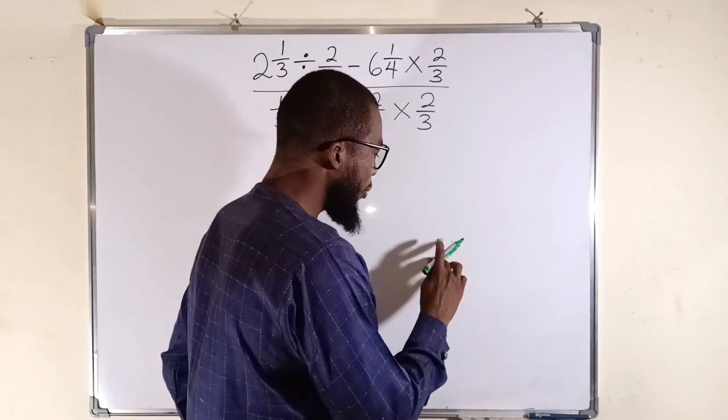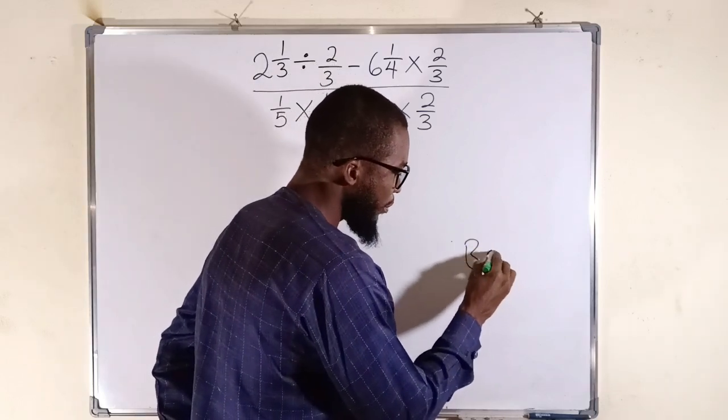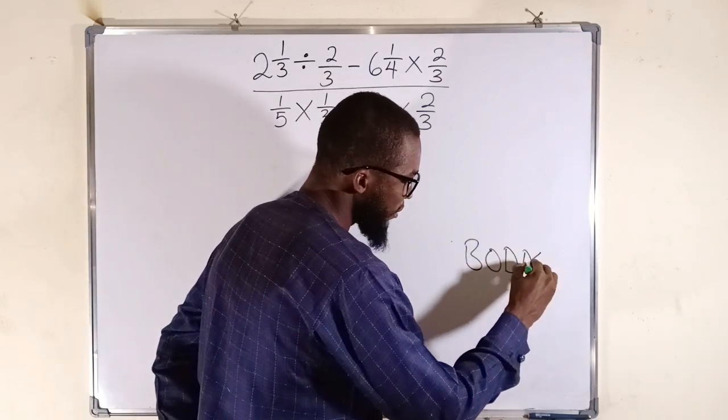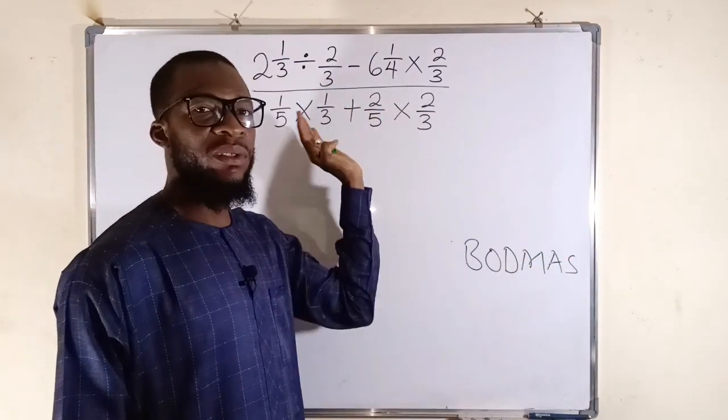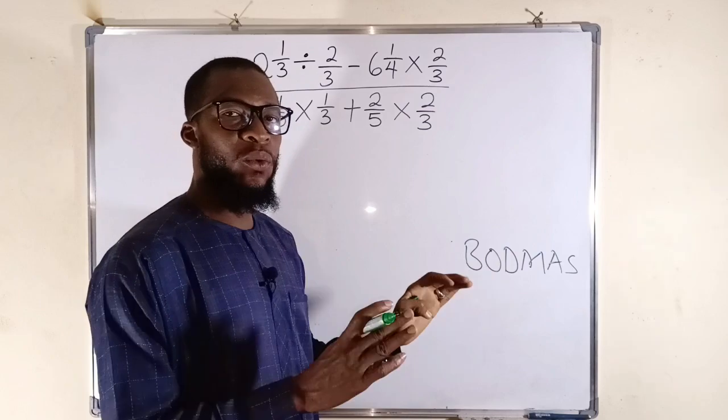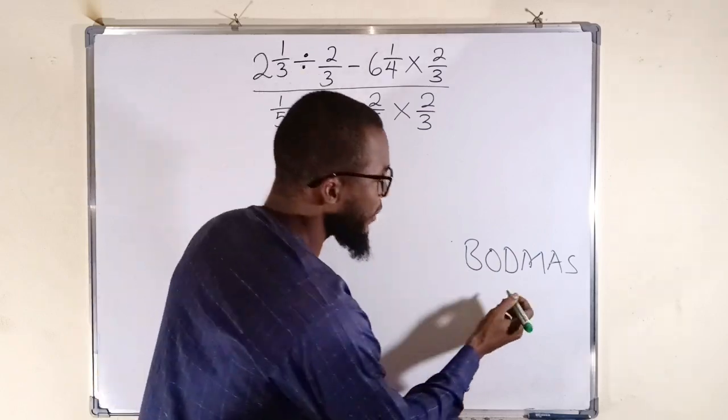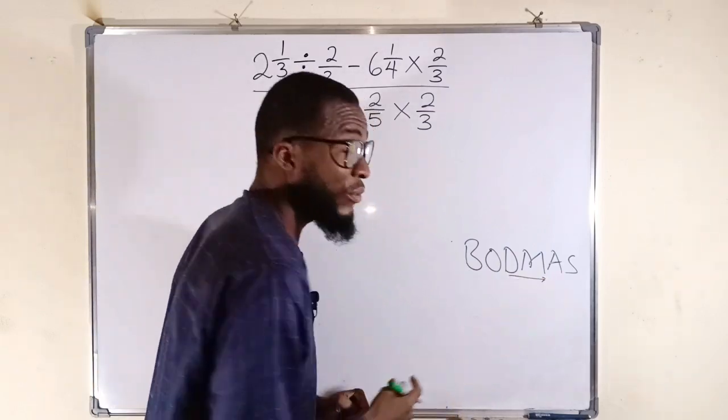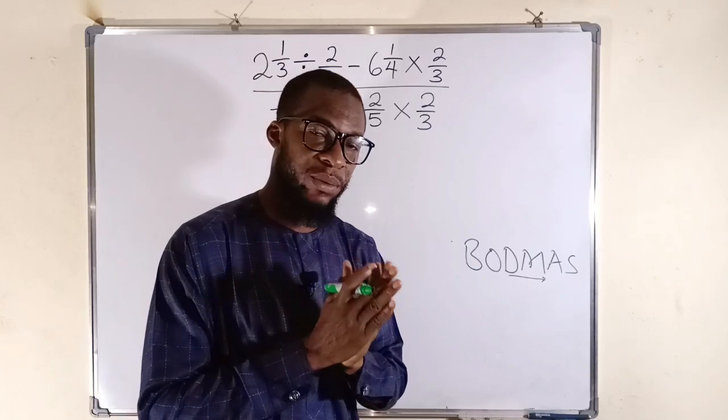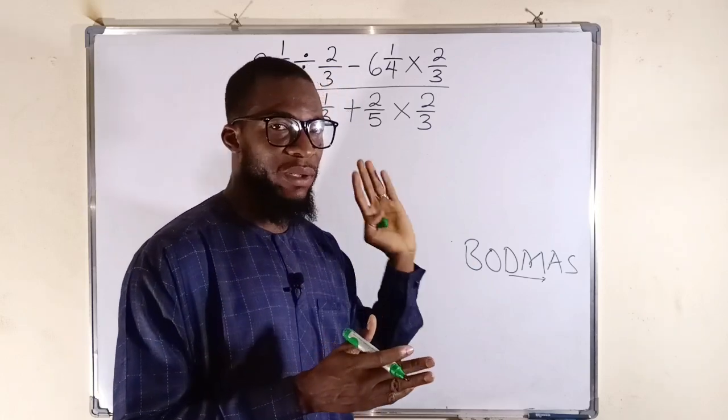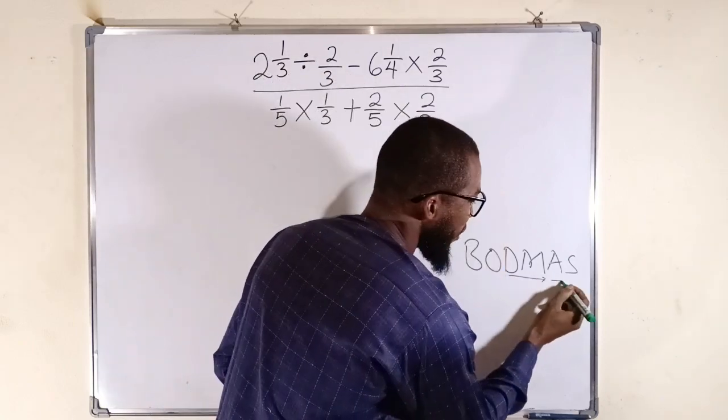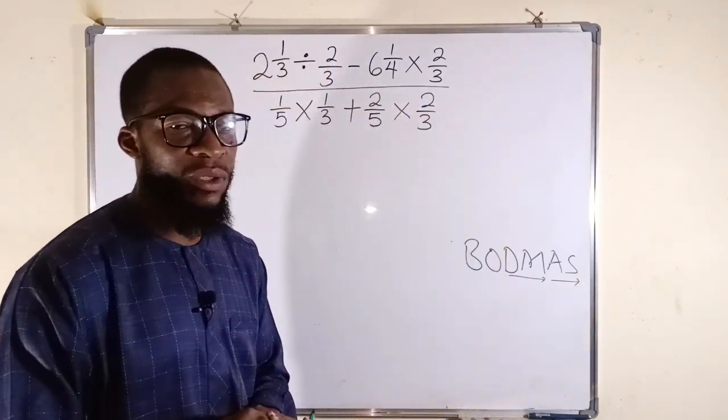And we're going to apply BODMAS in dealing with this problem. B stands for bracket which is absent here. O stands for orders, also absent here. But division and multiplication, remember, they are done simultaneously, starting with anyone that comes first from left to right. The same thing applies to addition and subtraction.